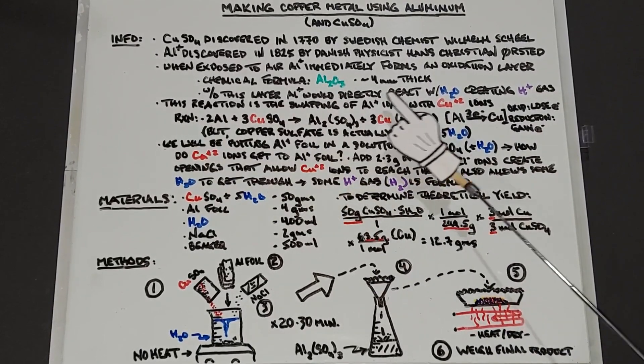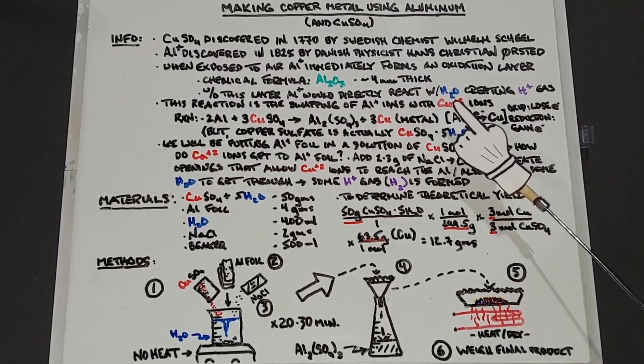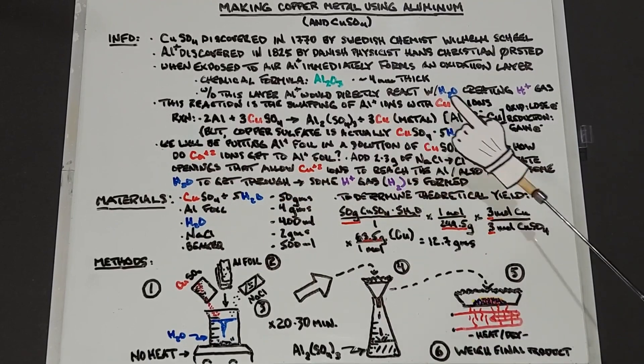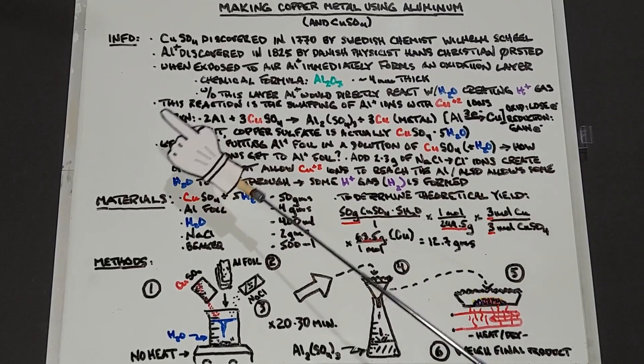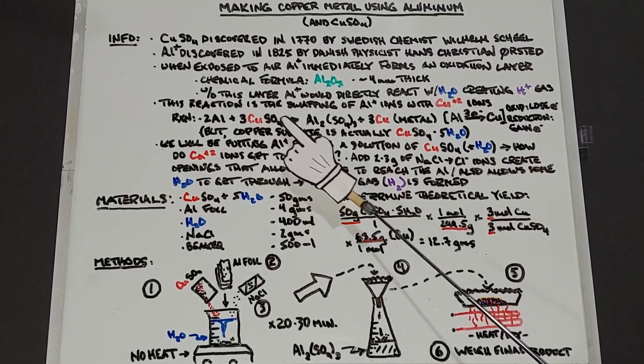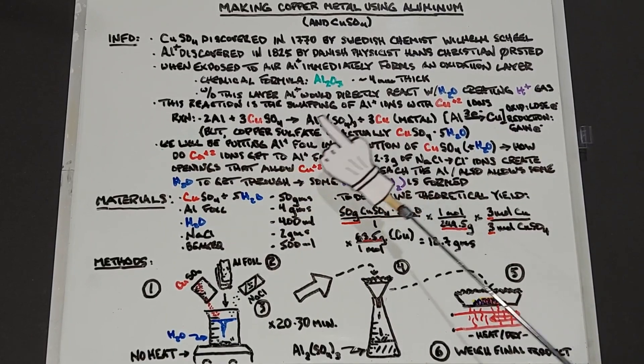Aluminum is so reactive that without this oxide layer, aluminum would react with water creating hydrogen gas without using any electricity. The reaction we're looking at today is swapping aluminum ions with copper ions. This is a balanced equation: we have 2Al plus 3CuSO₄ yields Al₂(SO₄)₃ which is aluminum sulfate.